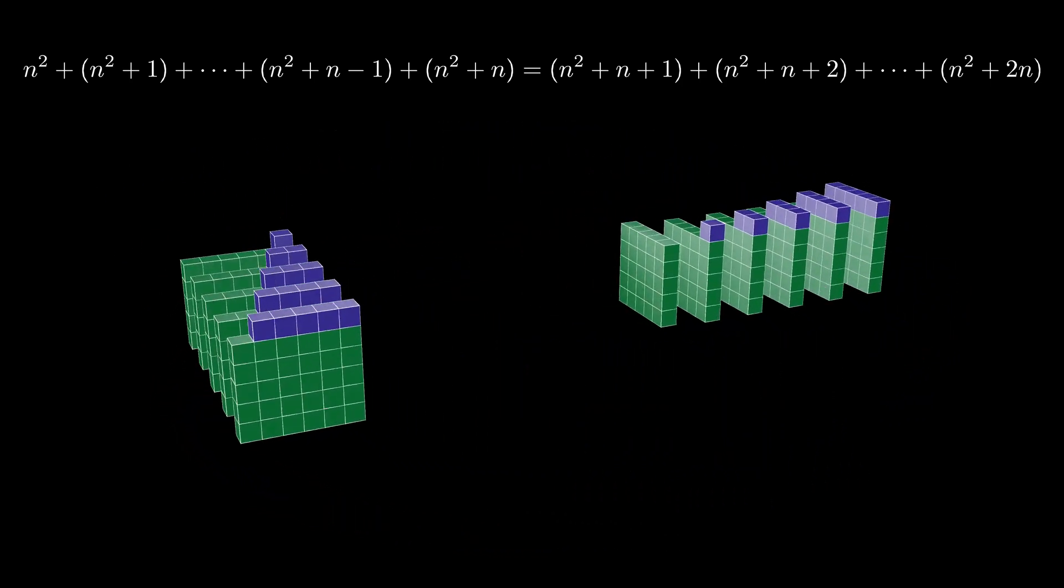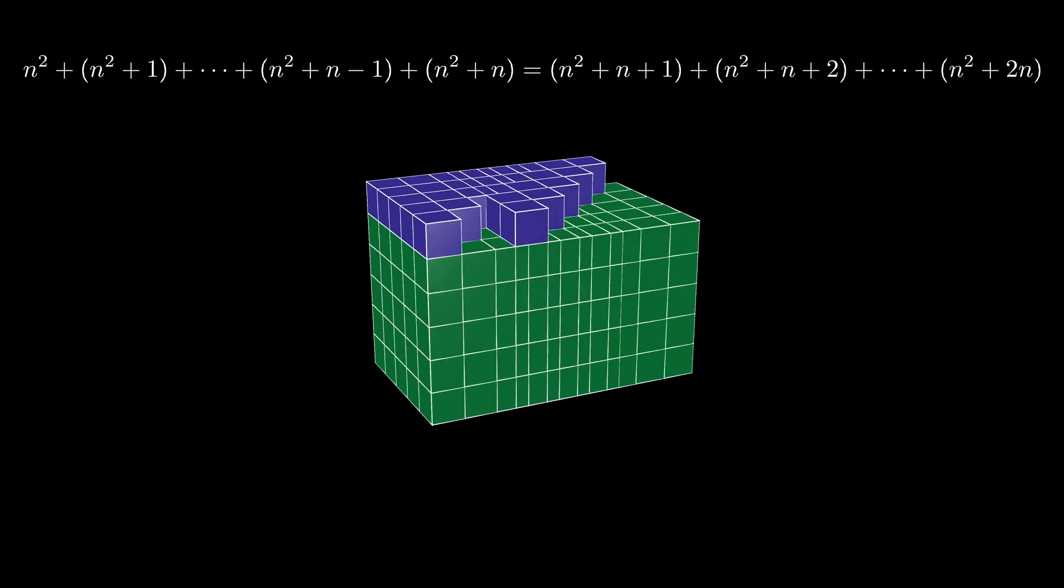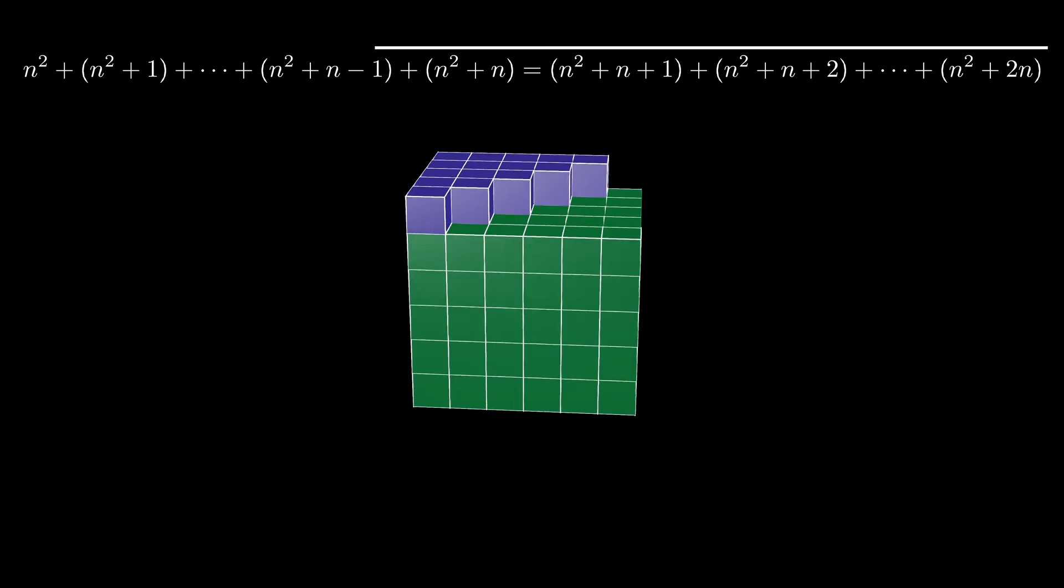Therefore, the formula that we're looking for says that the sum of the numbers from n squared to n squared plus n is equal to the sum of the numbers from n squared plus n plus 1 up to n squared plus 2n.